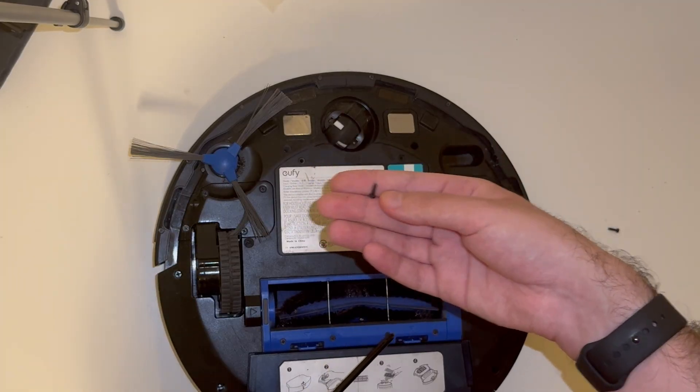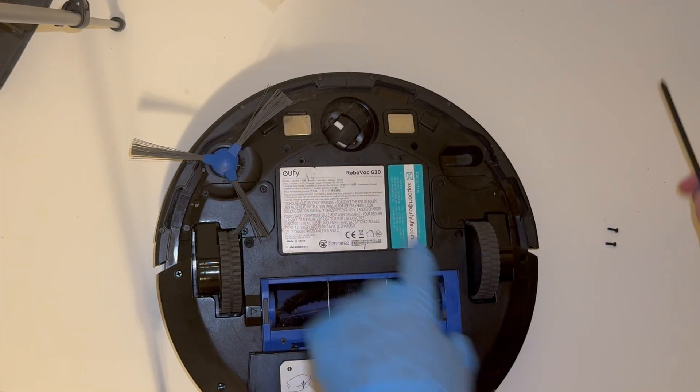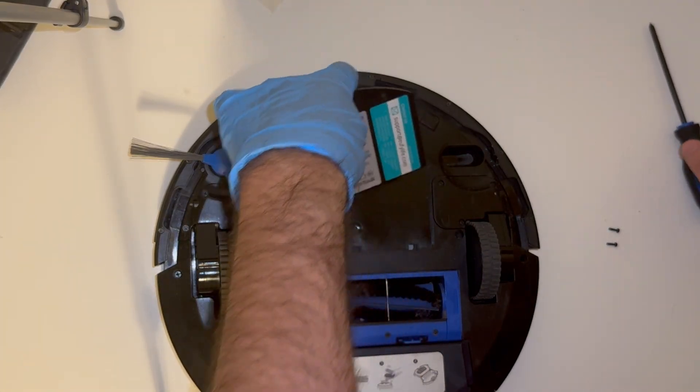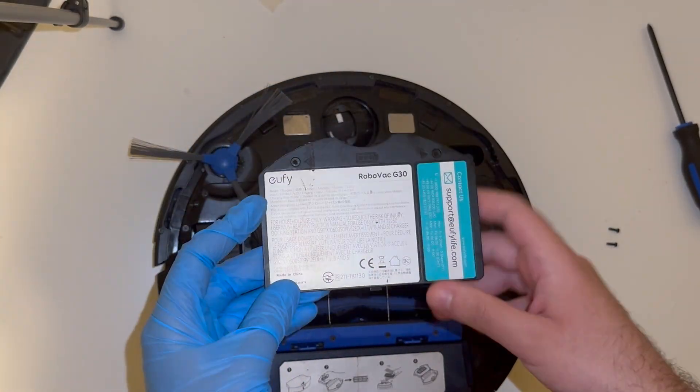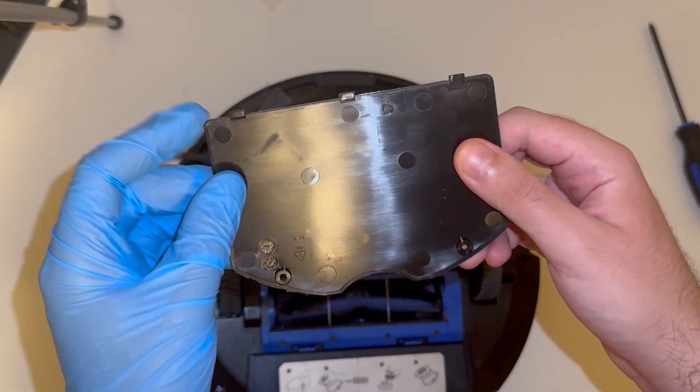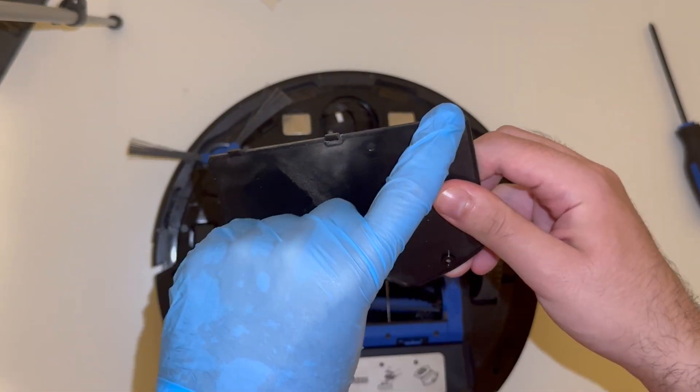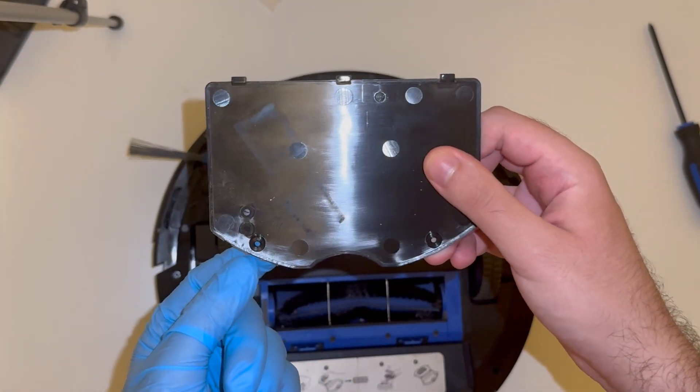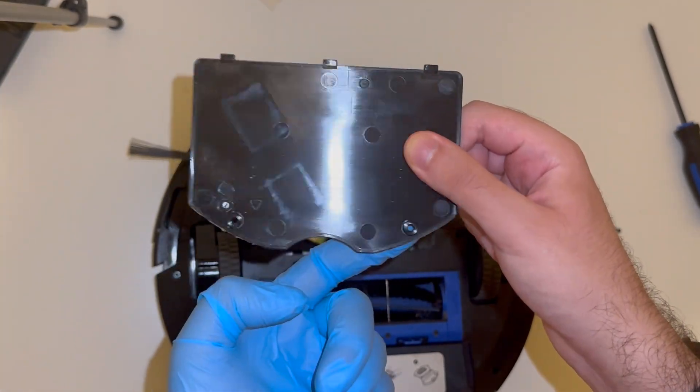After removing these two identical Phillips head screws, the battery cover just pulls open. As you can see here there's just tabs on the back side that was holding it in place, and you can see the two holes where the screws go through right there and there.